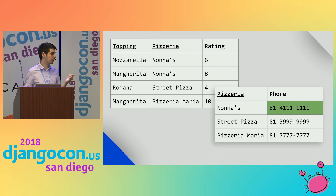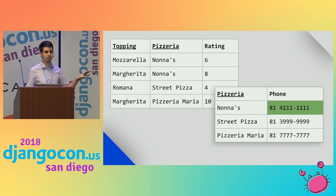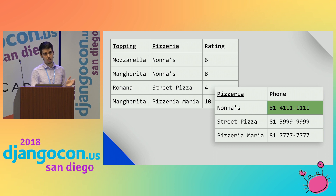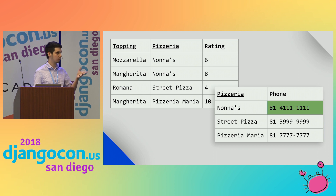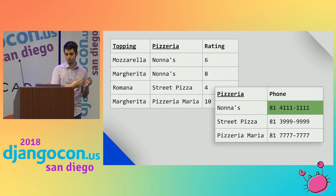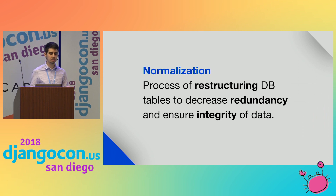On that example, the solution is to create another table just for pizzerias and store the phone there. By doing this, we can't have repeated phones — or if we do, the structure will either allow or prohibit that for us. So normalization is the process of restructuring a database to decrease redundancy and ensure integrity of data.